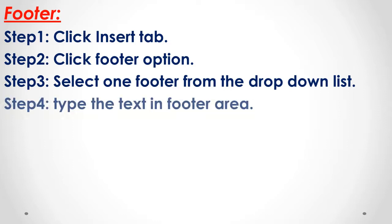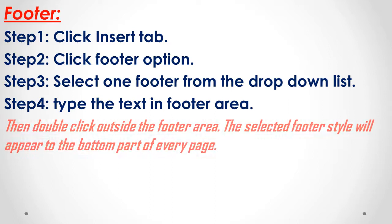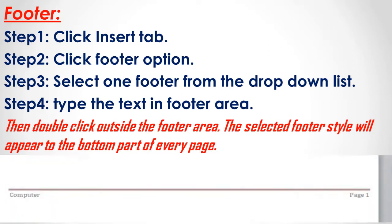From the drop-down list, select any one type of footer. Step 4: Type the text in the footer area. After selecting a footer type, the bottom of the current page will show a dotted line. Type the text you want there. Then double-click outside the footer area, and the selected footer style will appear at the bottom of every page. For example, on the right side I have given a page number, and the page number changes as 1, 2, 3 accordingly.